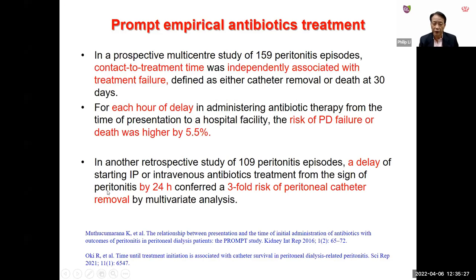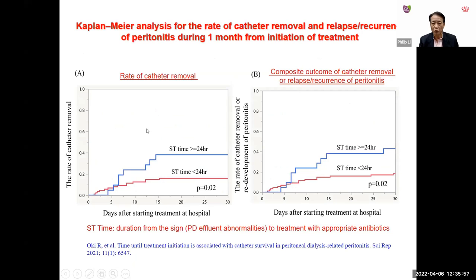Prompt empirical antibiotic treatment is supported by two studies. The first, involving approximately 160 peritonitis episodes, showed contact-to-treatment time was independently associated with treatment failure — for each hour delay, the risk of PD failure or death increased by approximately 5.5%. A second retrospective study of 109 episodes found a delay of 24 hours conferred a three-fold risk of catheter removal. Catheter removal risk was significantly higher when treatment was delayed more than 24 hours.